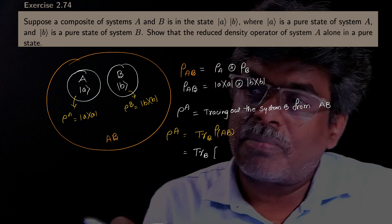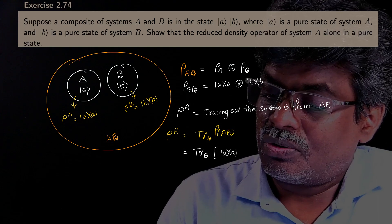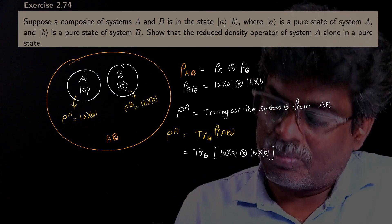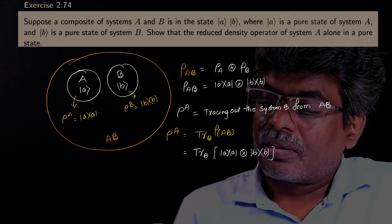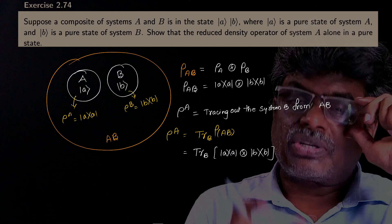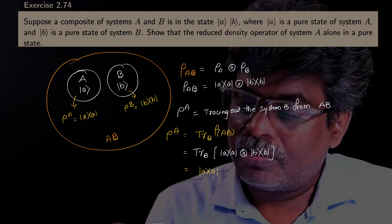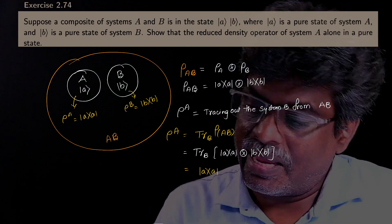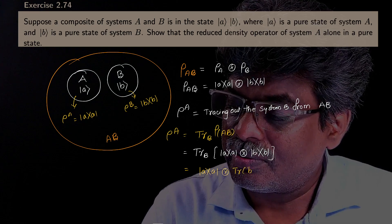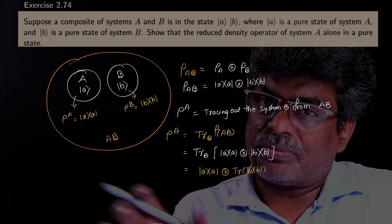The combined density operator is |A⟩⟨A| tensor |B⟩⟨B|. Now we have to take the trace over B only. So the first system — the outer product or projector |A⟩⟨A| — stays as it is, and then tensor the trace of B.